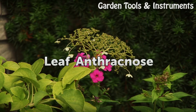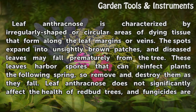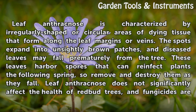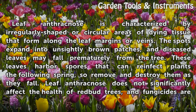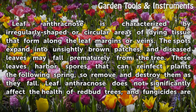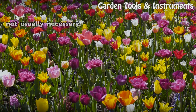Leaf Anthracnose. Leaf anthracnose is characterized by irregularly shaped or circular areas of dying tissue that form along the leaf margins or veins. The spots expand into unsightly brown patches, and diseased leaves may fall prematurely from the tree. These leaves harbor spores that can reinfect plants the following spring, so remove and destroy them as they fall. Leaf anthracnose does not significantly affect the health of redbud trees, and fungicides are not usually necessary.